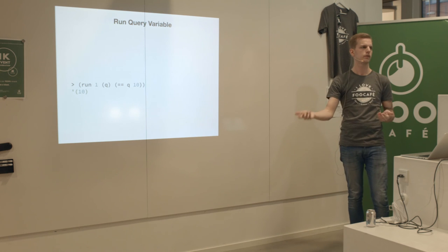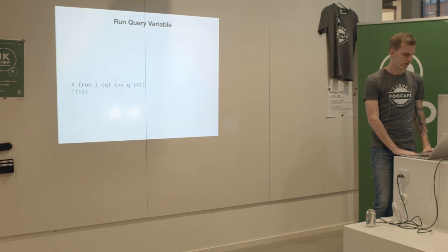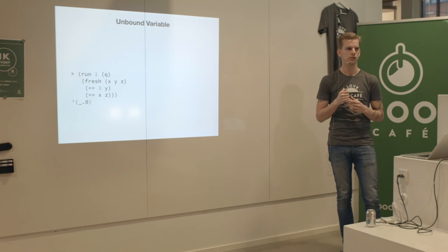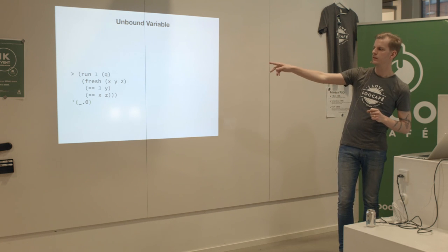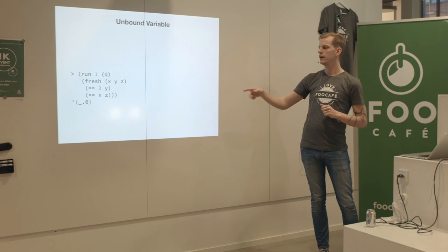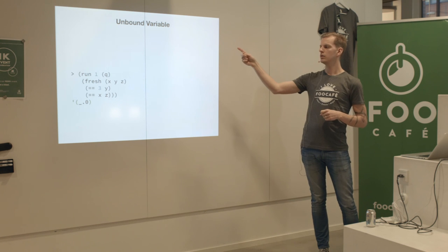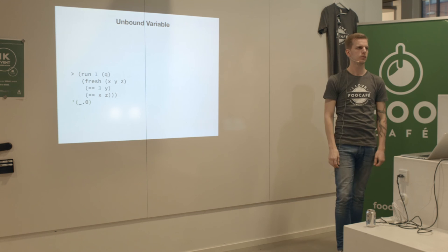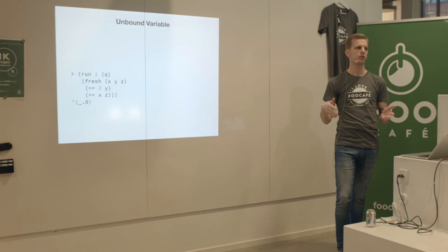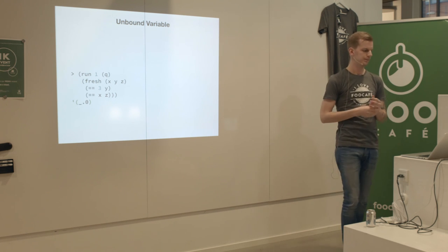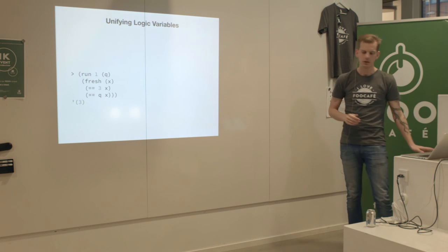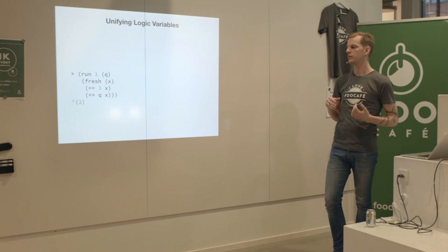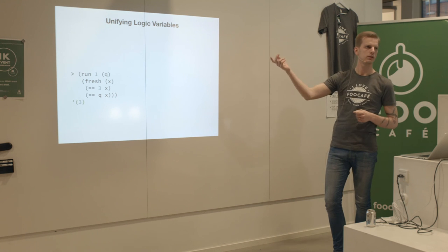If you don't unify logic variables they'll be unbound. With fresh we introduce things and unify them - Y will be free, X and Z will be the same. Q we ignore. As Q is the output query variable, the result will be underscore-dot-zero, which means it's unbound - a way to represent an unbound value in the result set.